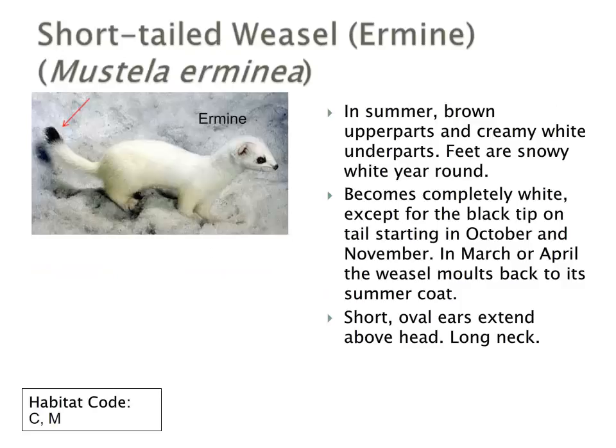The short-tailed weasel, or ermine, goes through a colour change in its pelage throughout the year. In the summer, it's brown on its upper parts and creamy white below, with white feet all year round. However, in the winter, it becomes completely white, except for the black tip on its tail, which is one of its unique features. The length of the tail relative to its body and size will be a key characteristic in identifying it from its other relatives.